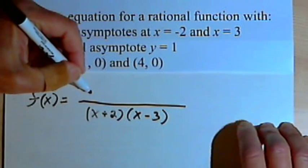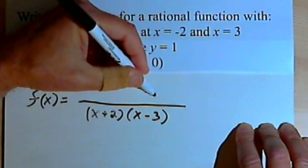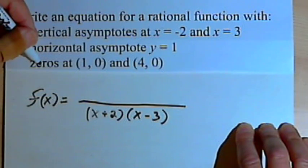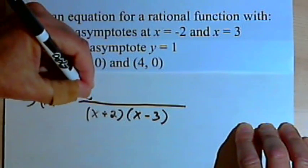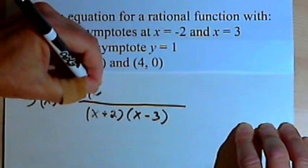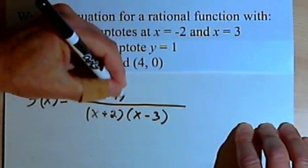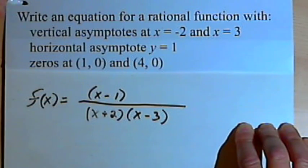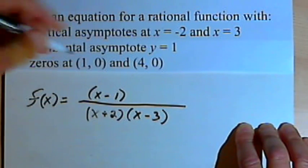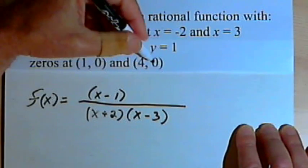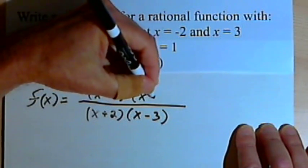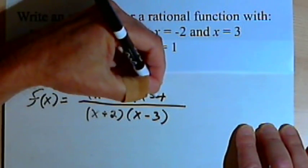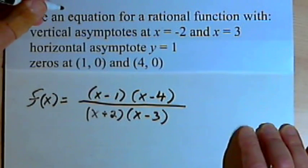Then I'll find the factors of the numerator by looking at the zeros. There's a zero at (1, 0), so I'm going to have x minus 1 as a factor in the numerator. And there's a zero at (4, 0), so I'll have x minus 4 as a factor in the numerator.